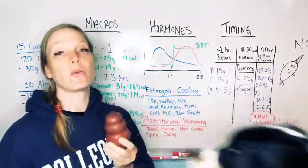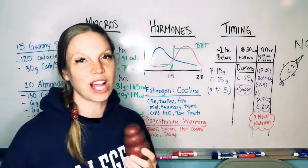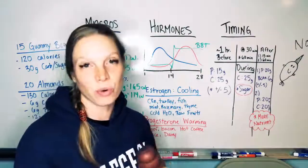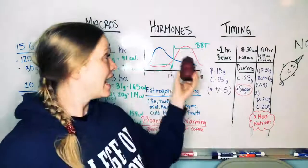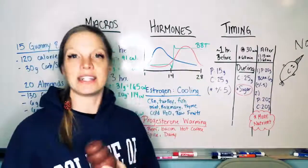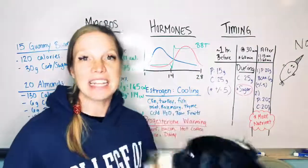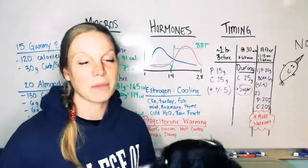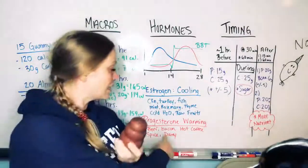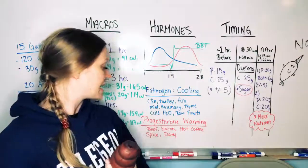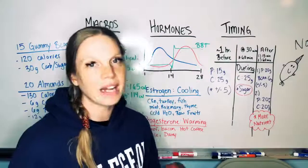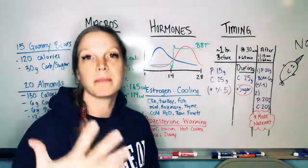So progesterone, because your body temperature is actually higher at this point too, you can actually tap into deeper fat burning stores that your body has at this point. So I talk about doing some intermittent fasting and some other specific things at this point to really get your body into fat burning mode a lot better. But overall, eating warming foods here, beef, bacon, dairy, spicy foods, obviously warming for the body, they're going to help your digestive system function better.